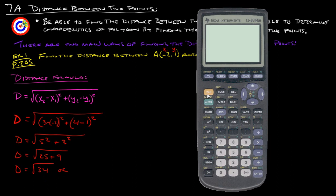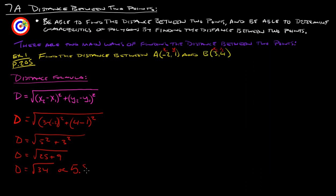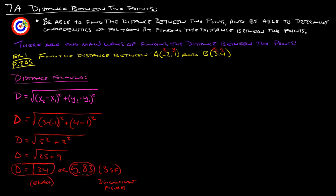If the square root of 34 doesn't satisfy you and you want the actual decimal answer, that would be okay too. The square root of 34 is actually more accurate than the decimal, so you can just leave it as √34. But if you really want to know, you can write 5.83 — and if you round it, you'd write 3SF, which stands for three significant figures, implying that you rounded. So D equals √34 is the exact answer, or D equals 5.83 (3SF).